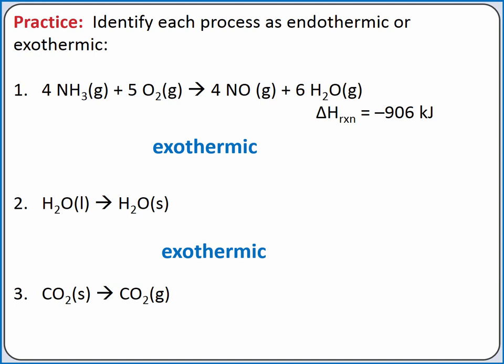In our third example, we're changing from solid carbon dioxide, which is dry ice, directly to a gas. Going directly from solid to a gas is called sublimation. Any time we change in the direction from a solid to a liquid to a gas, the substance must absorb thermal energy, so the process is endothermic.